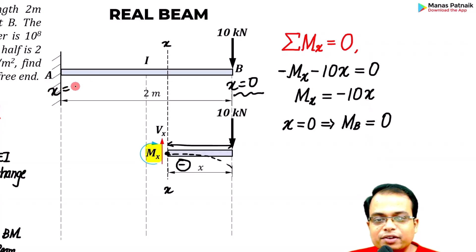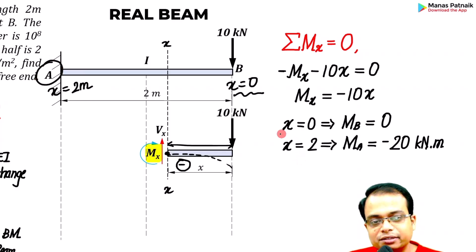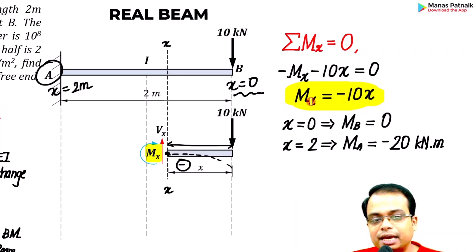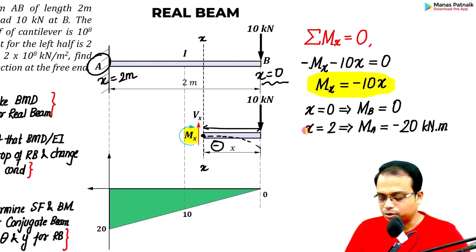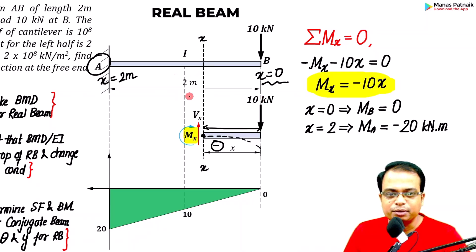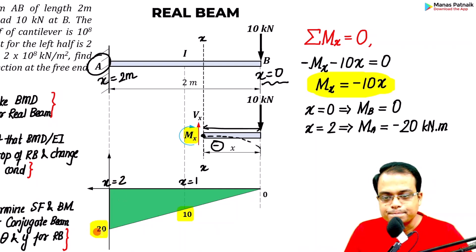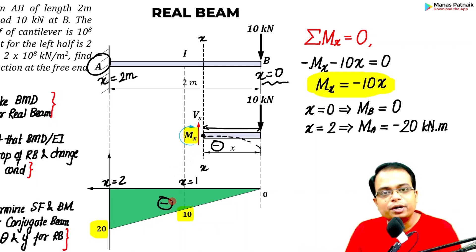Plugging in x = 2 meters gives the bending moment at the fixed end. The moment varies linearly with x: at x = 0, moment is 0; at x = 1, moment is −10; at x = 2, moment is −20. All values are negative, confirming hogging throughout.